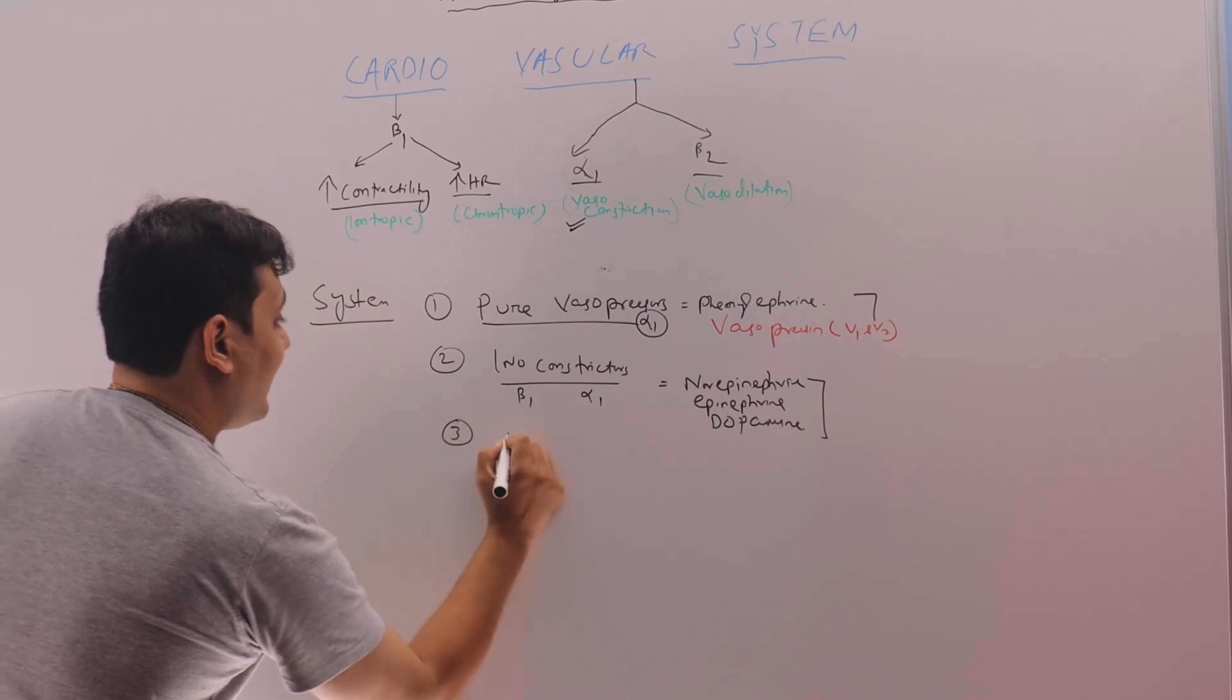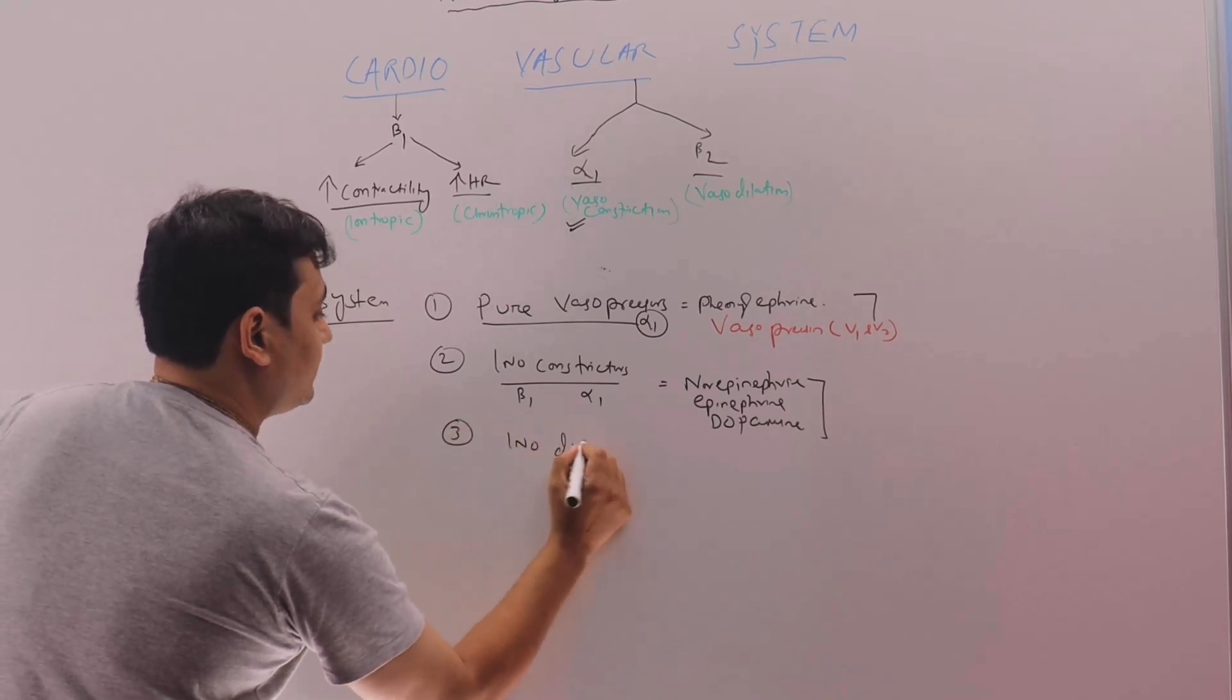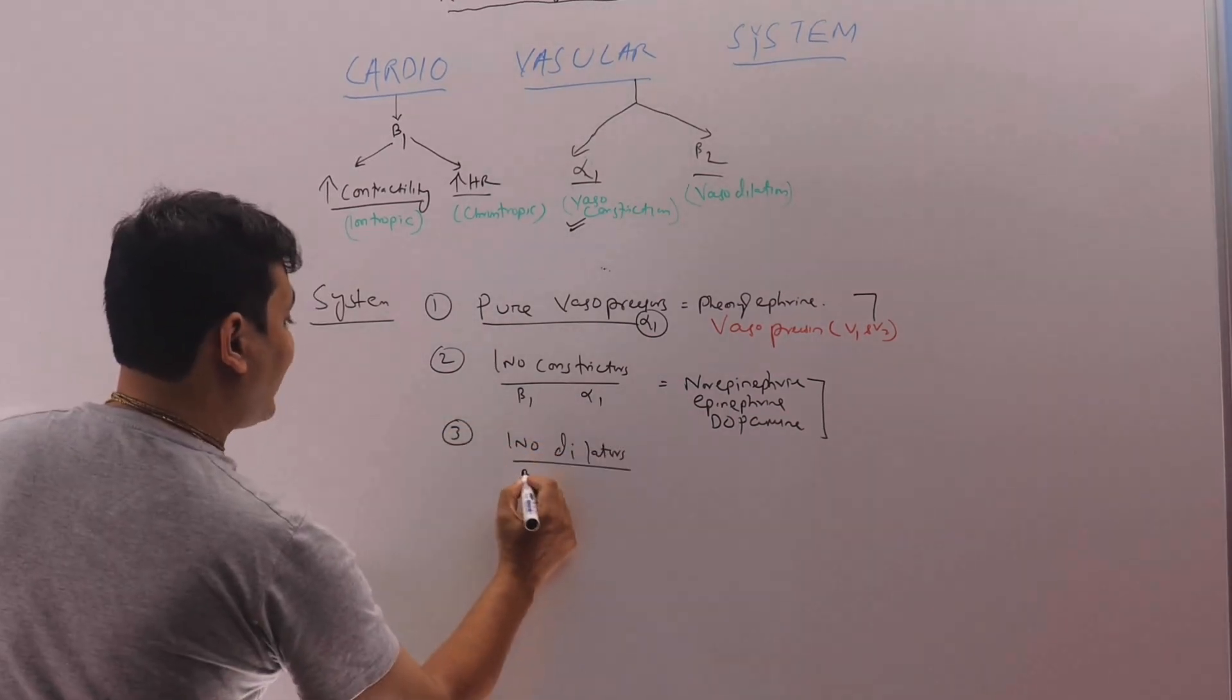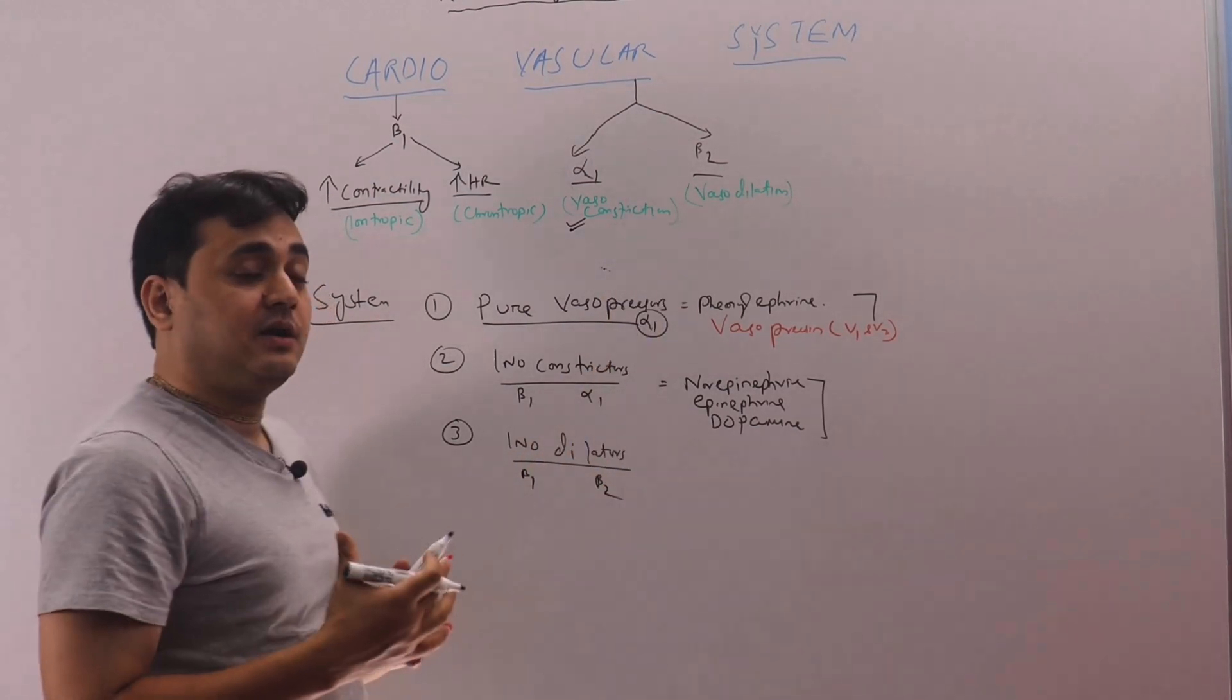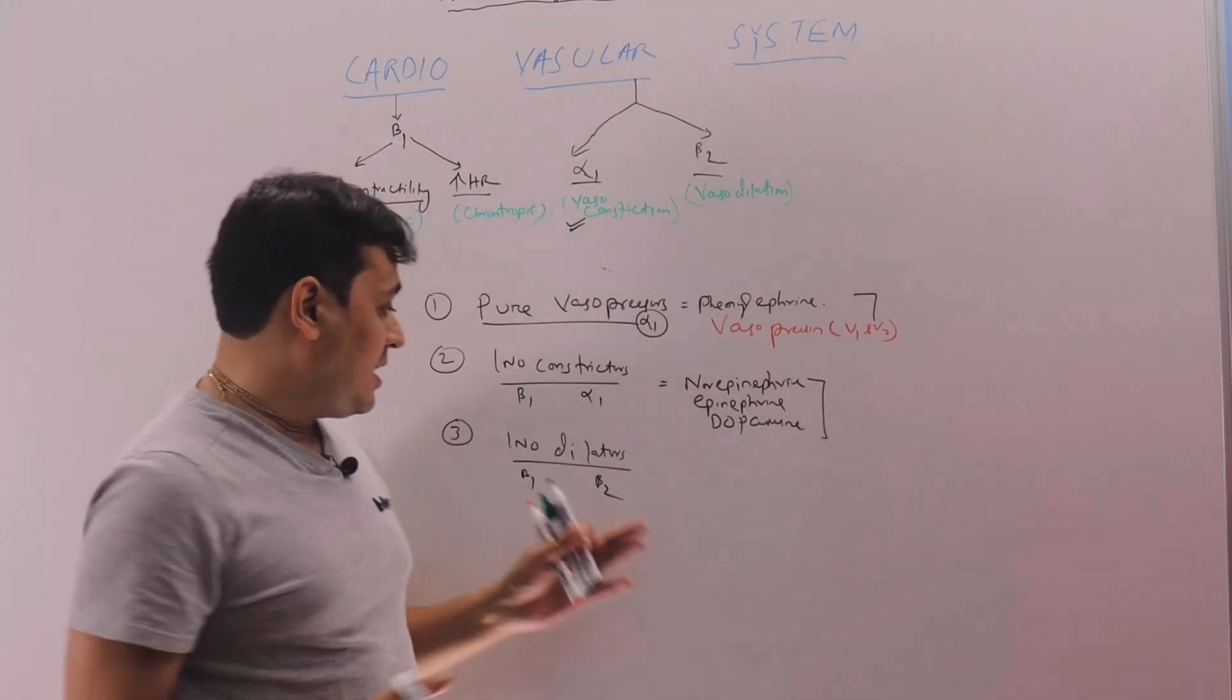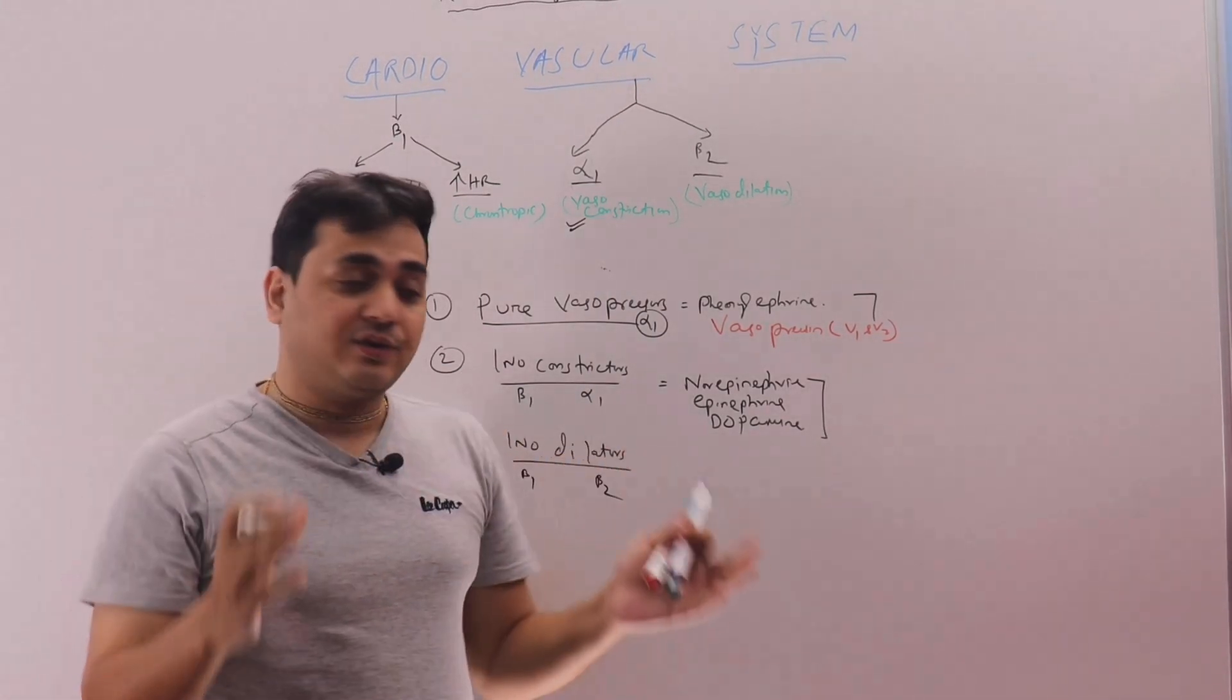Number 3 is inodilators. They have a beta 1 action here and they have a beta 2 action here. So they will make the heart contract faster and harder. At the same time they will dilate the peripheral blood vessels.